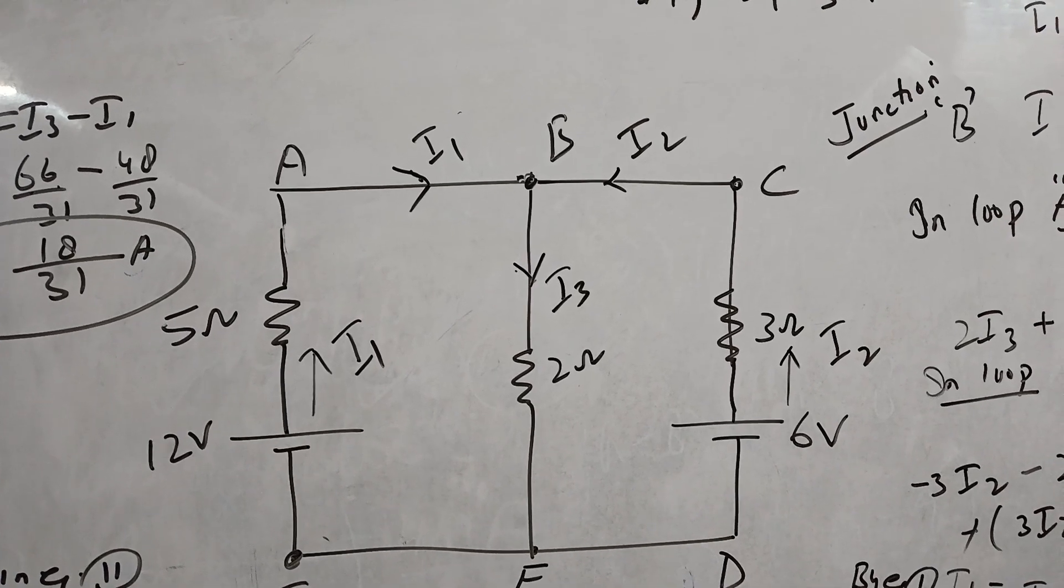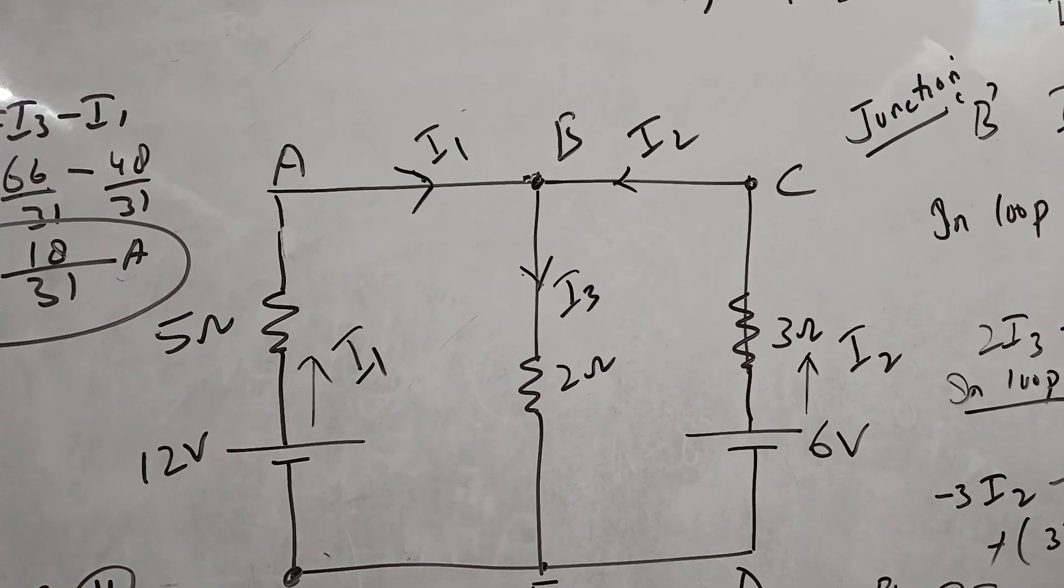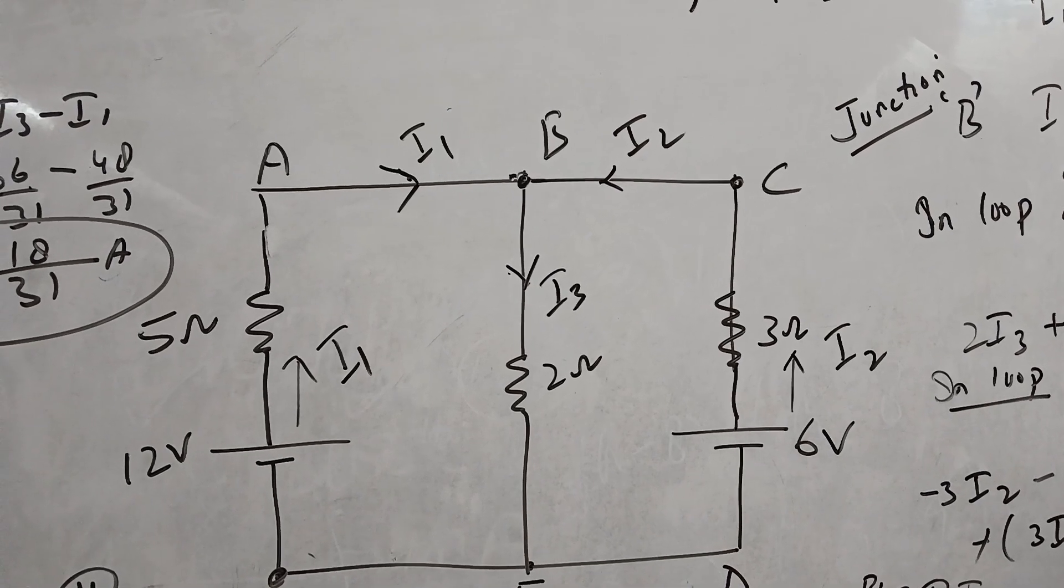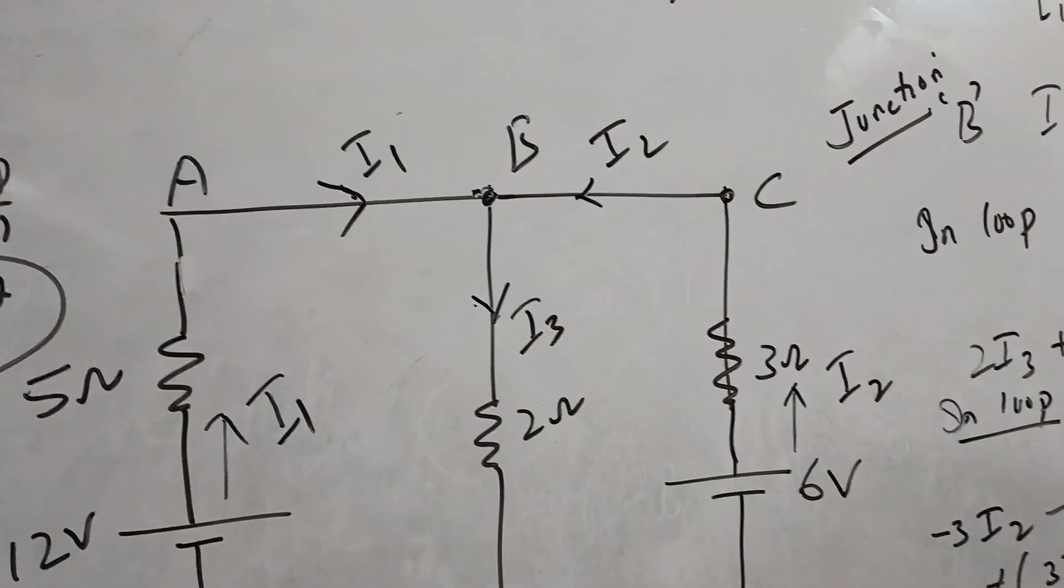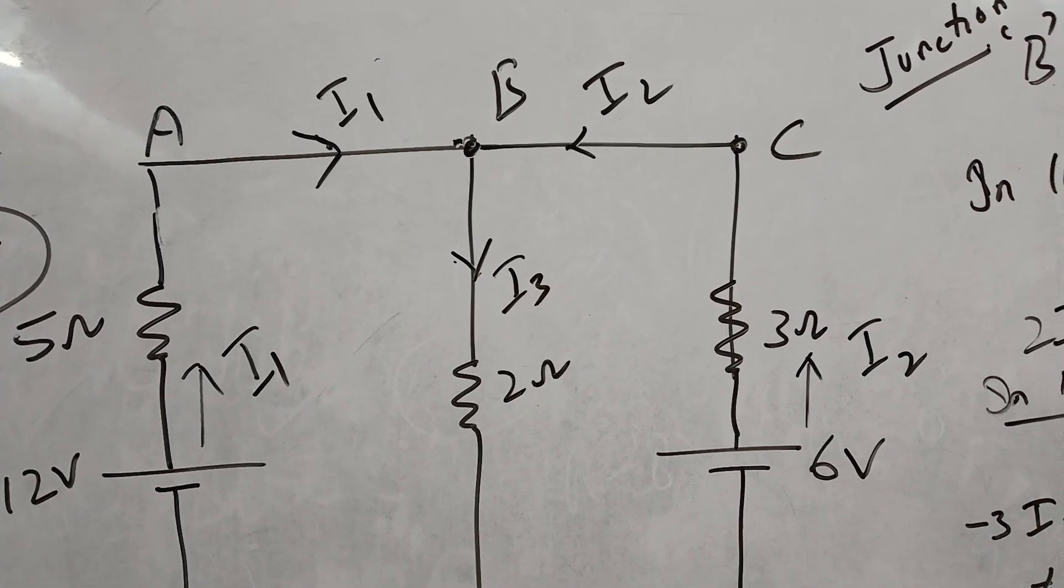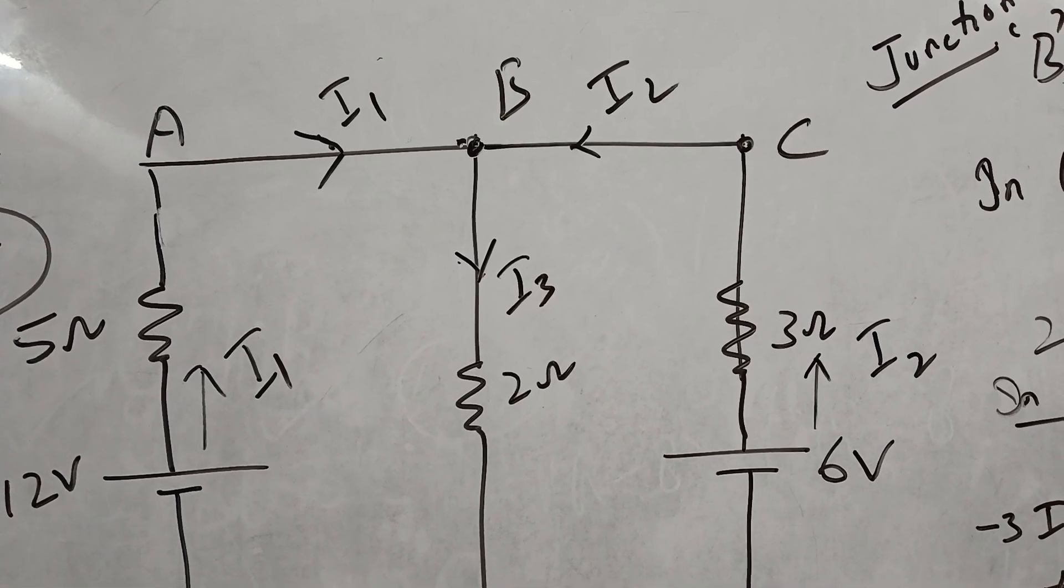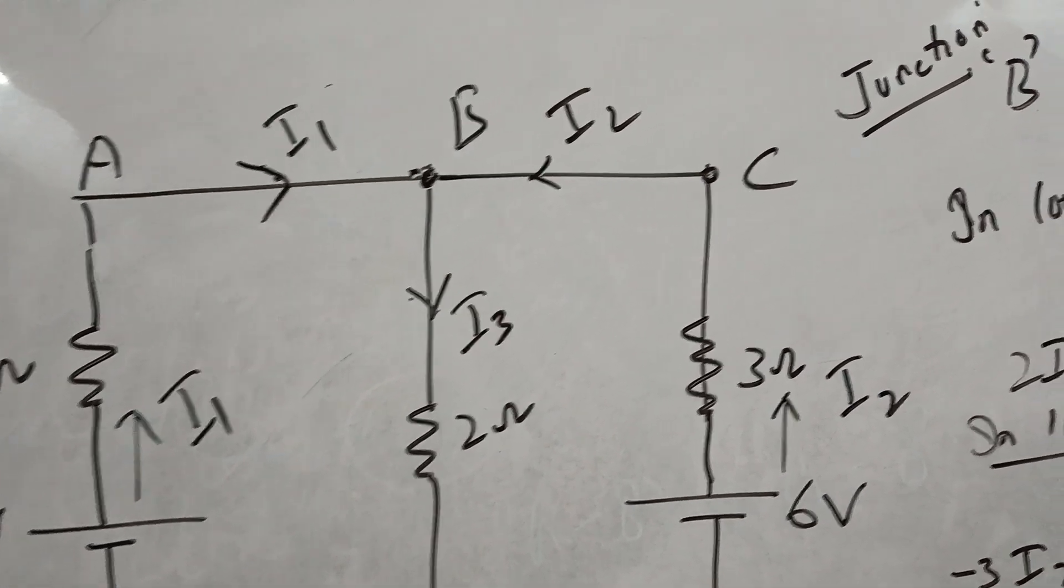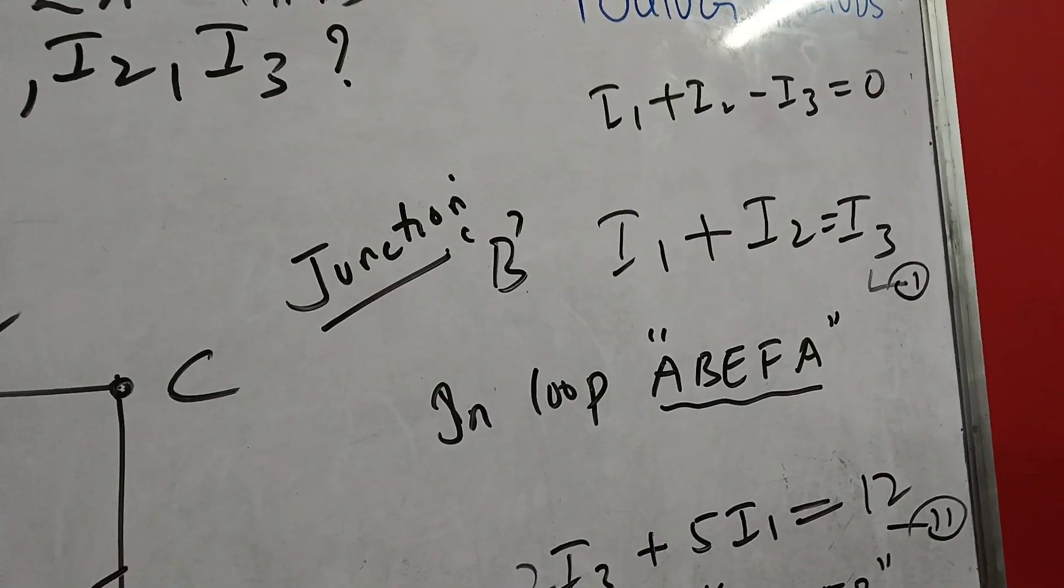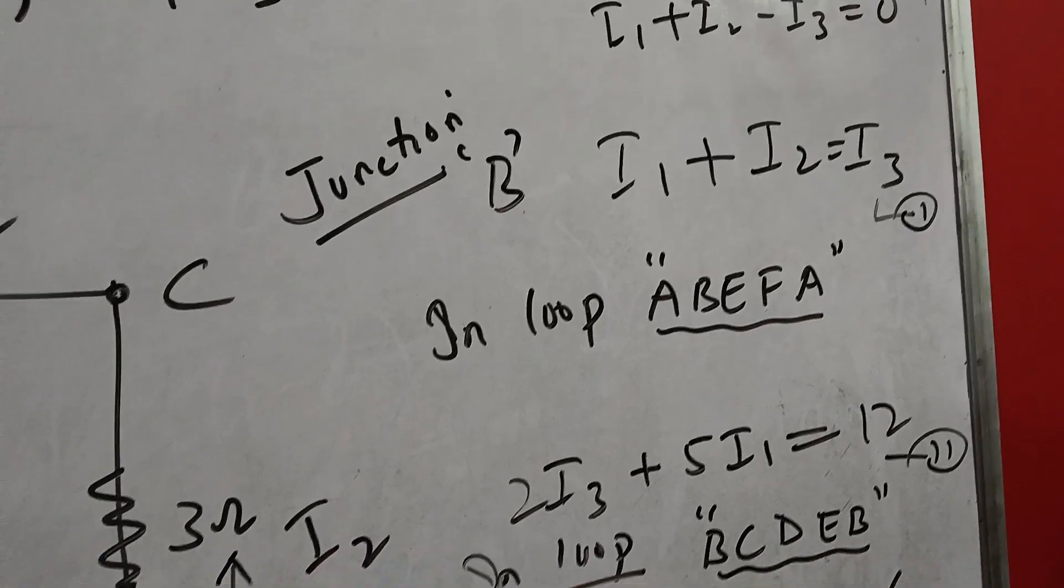To start with, let us use Kirchhoff's law at point B. We know that the algebraic sum of the current meeting at a junction is zero. So using Kirchhoff's law at junction B, we can write I1 plus I2 minus I3 equals zero. That is the algebraic sum of the current meeting at a junction is zero.